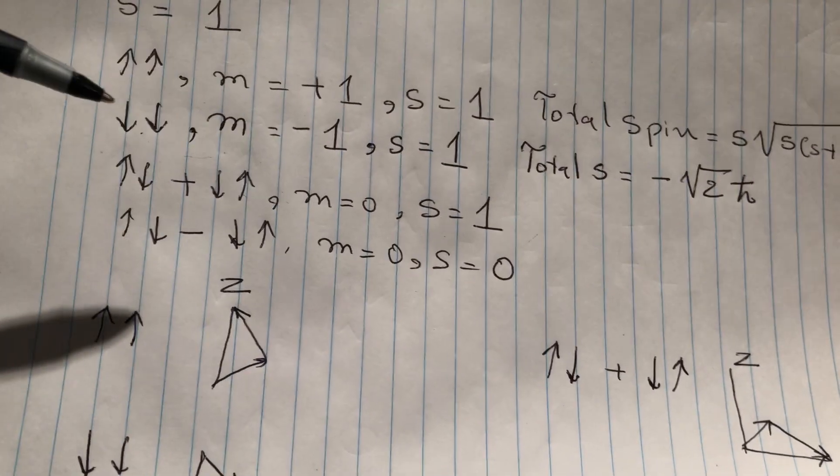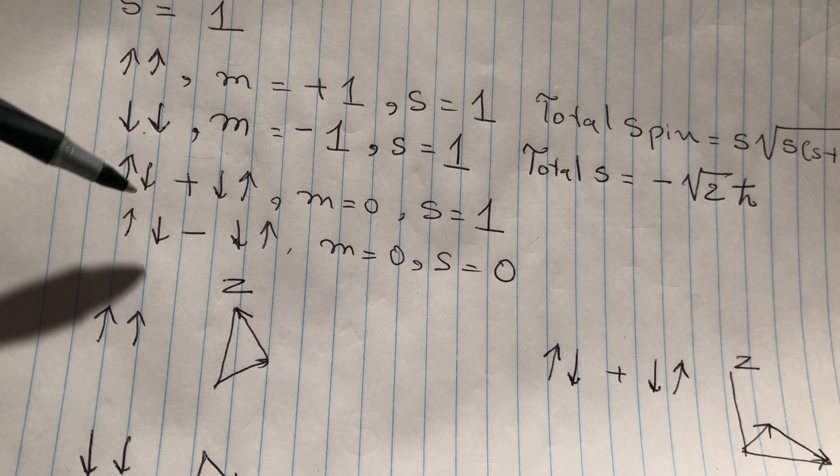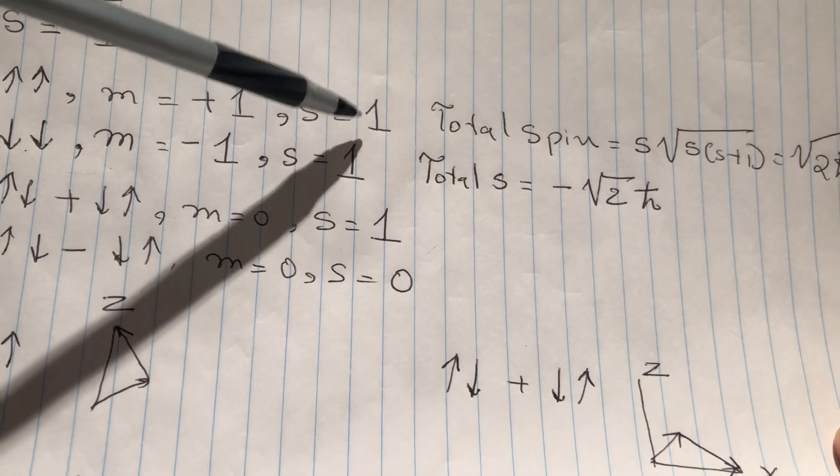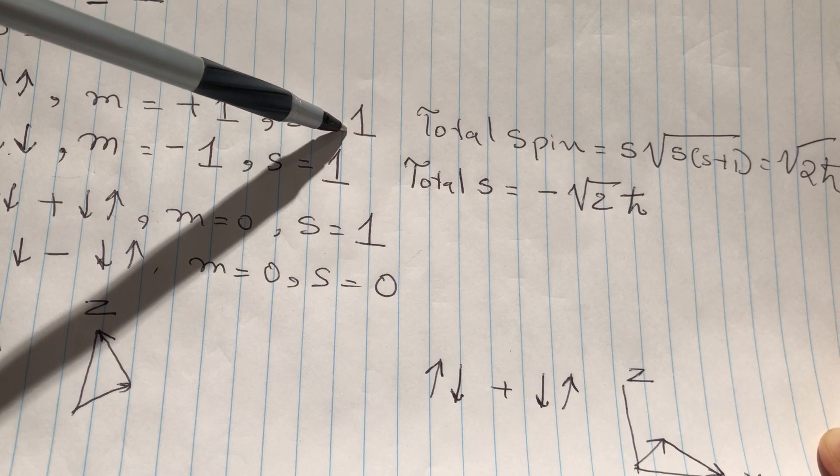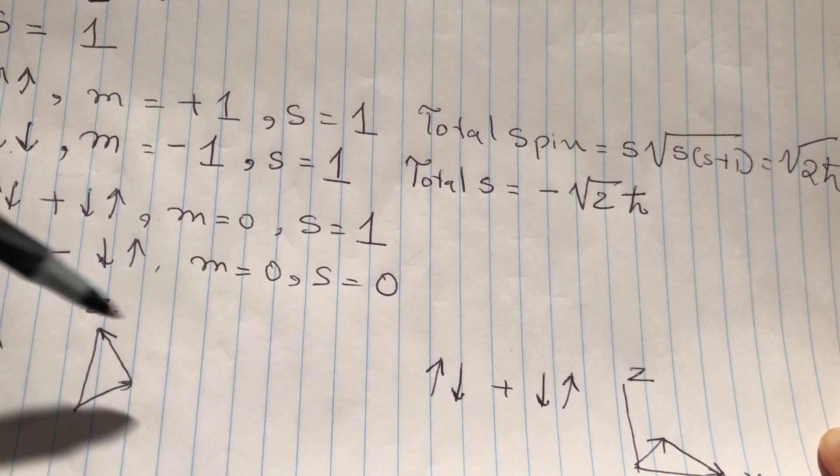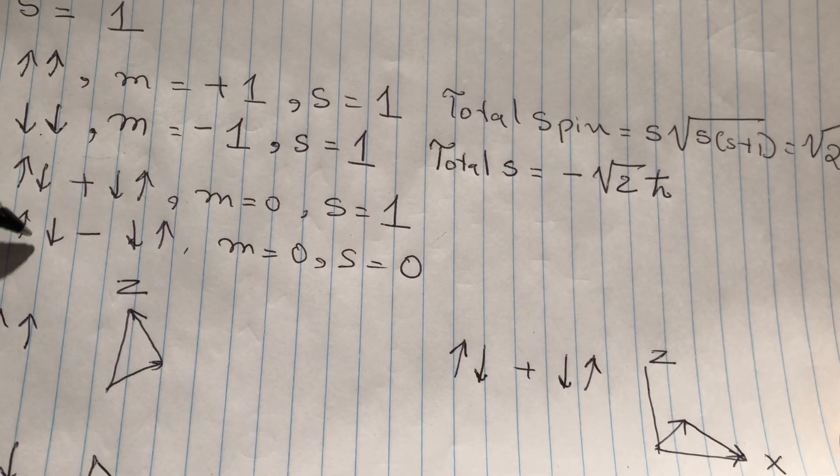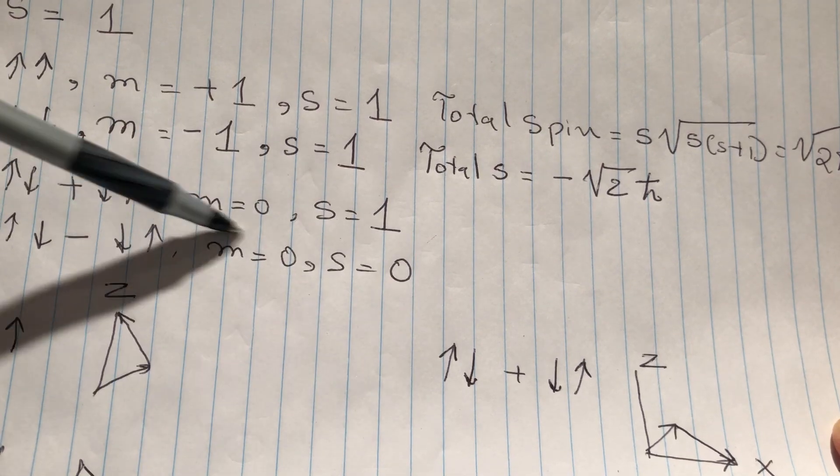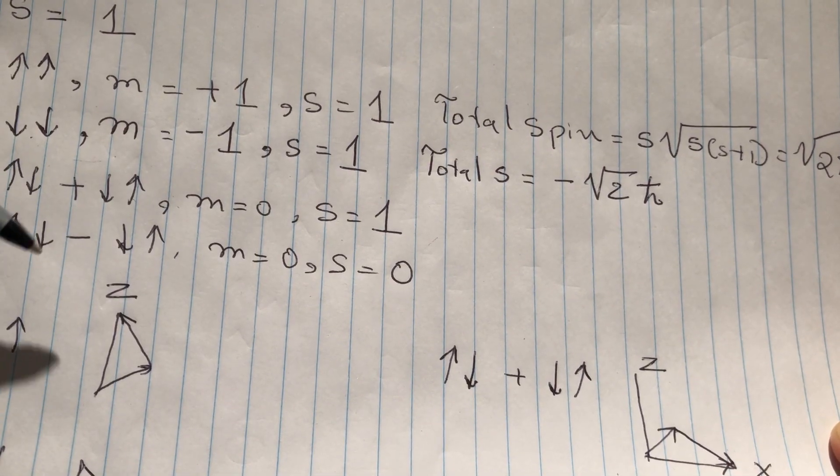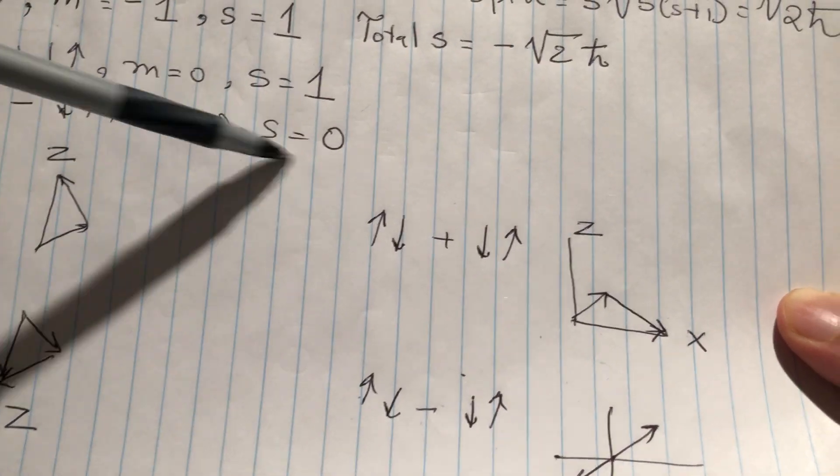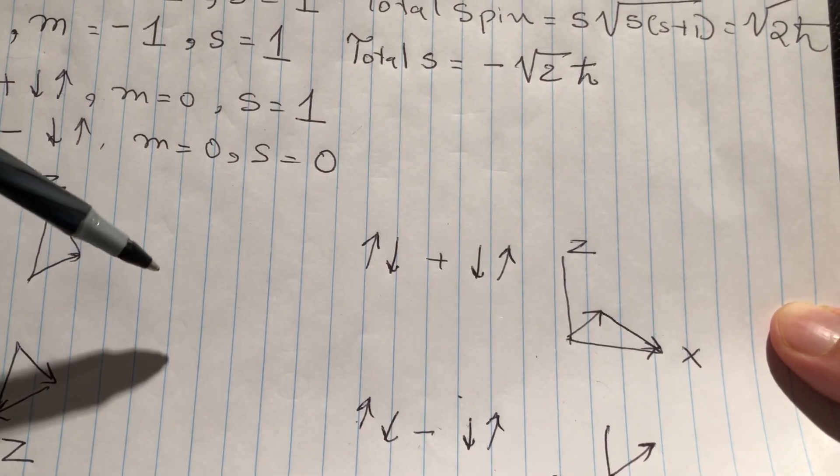So that's why these three states where the total spin quantum number is one, they are called triplet states. And this state where everything is zero is called a singlet state. So that's the way to think about these states is to visualize them, how they add up as vectors.